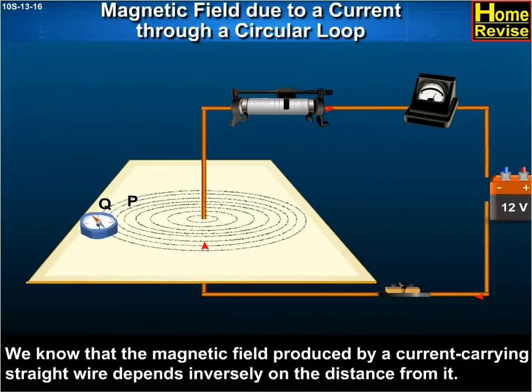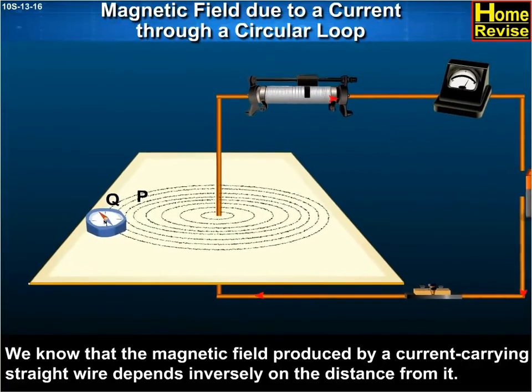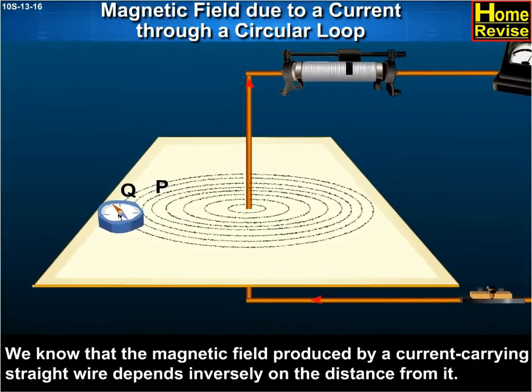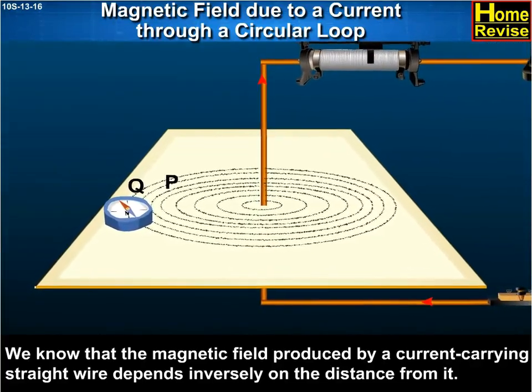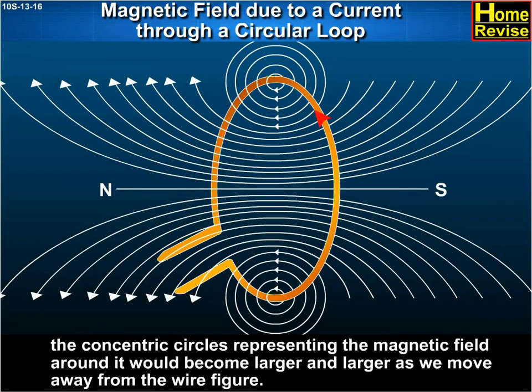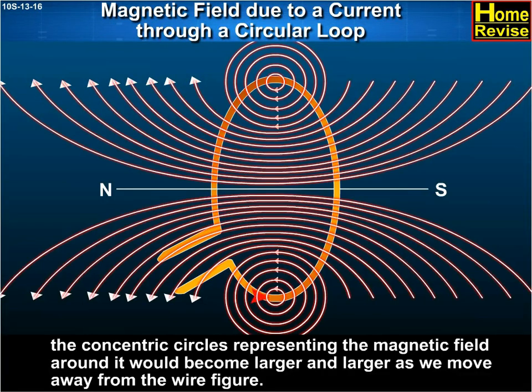We know that the magnetic field produced by a current carrying straight wire depends inversely on the distance from it. Similarly, at every point of a current carrying circular loop, the concentric circles representing the magnetic field around it would become larger and larger as we move away from the wire.